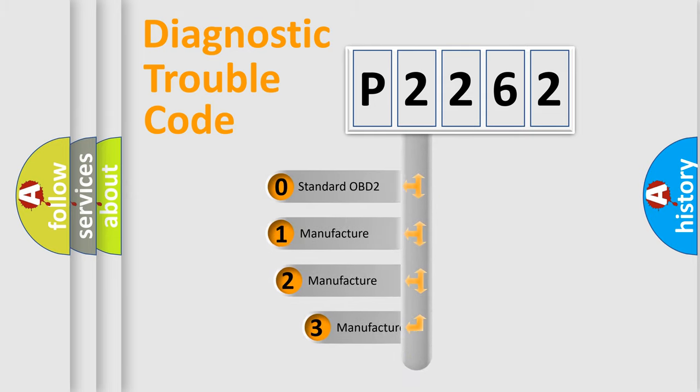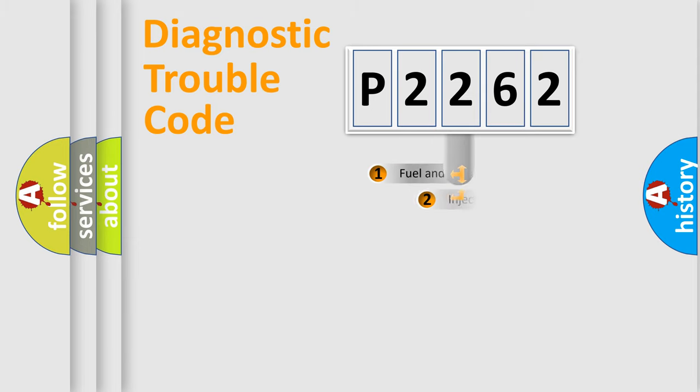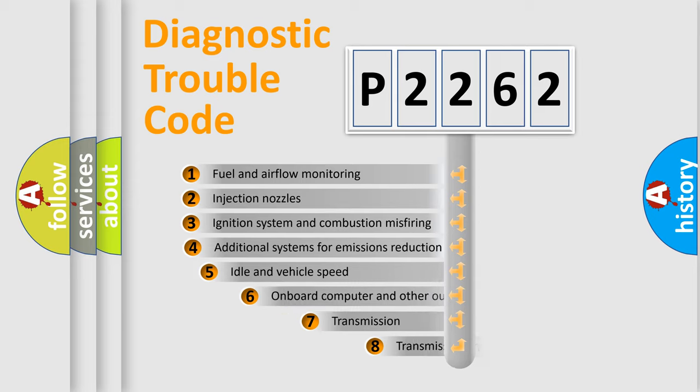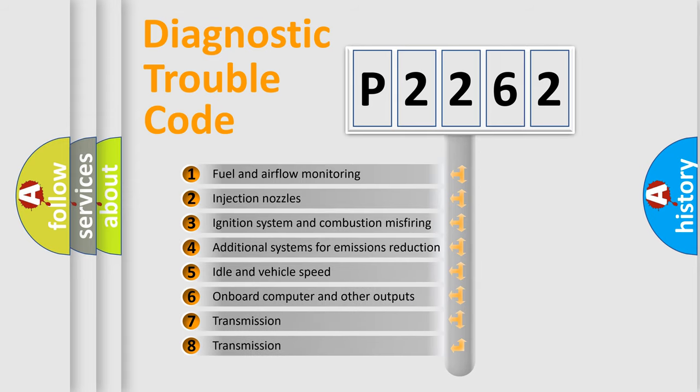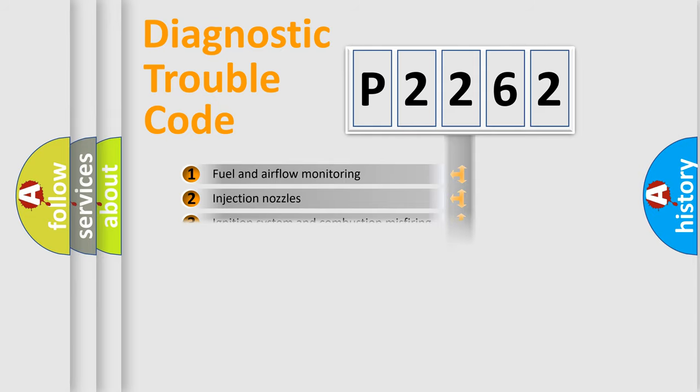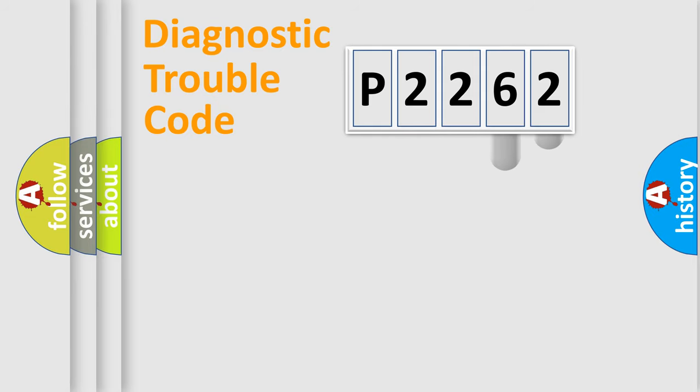If the second character is expressed as zero, it is a standardized error. In the case of numbers 1, 2, 3, it is a manufacturer-specific expression of the car specific error. The third character specifies a subset of errors. The distribution shown is valid only for the standardized DTC code.